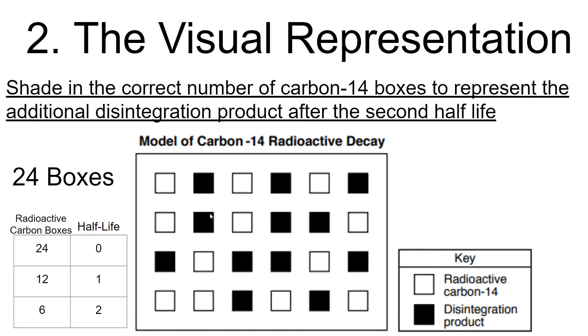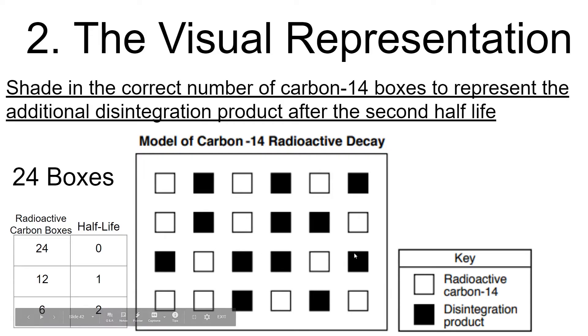It's asking you to shade in the correct number of carbon-14 boxes to represent additional disintegration product after the second half-life. After the first half-life, half of the radioactive carbon becomes a disintegration product. Counting them up: 12 products and 12 radioactive carbons — that means we're at one half-life.